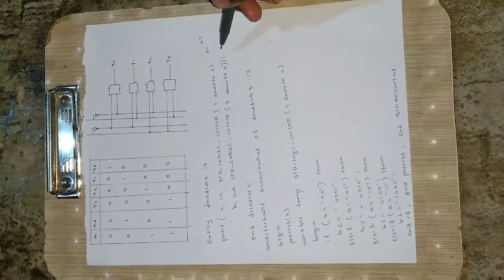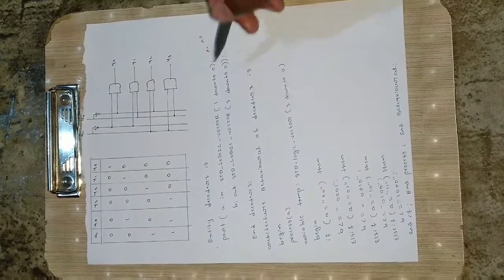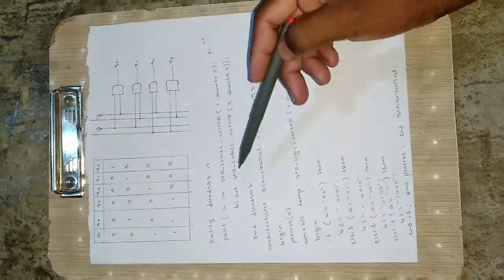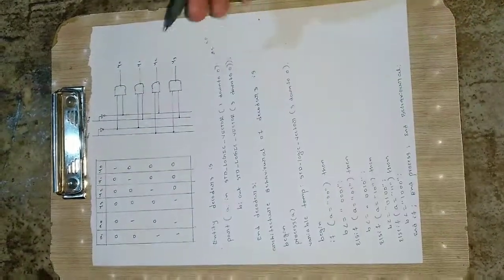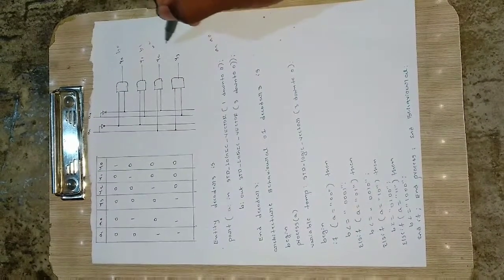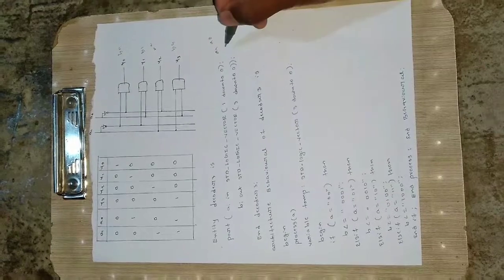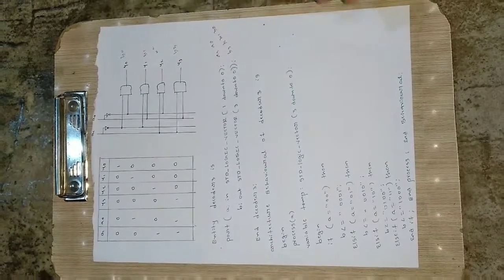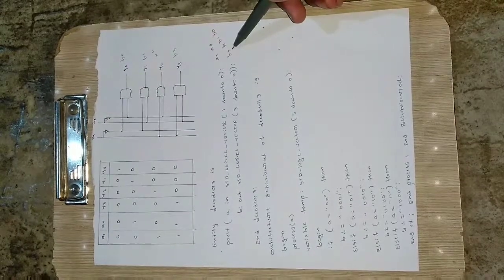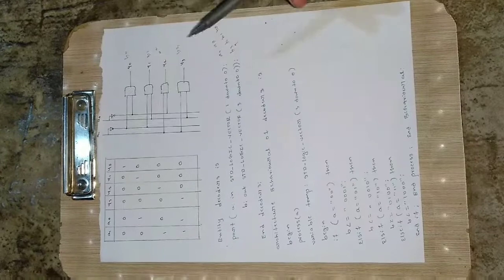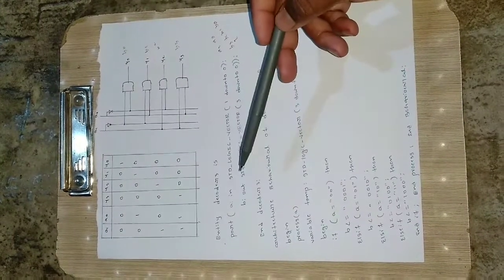So b out standard logic vector 3 down to 0. So here I have represented with y, so I have taken it as b here. So b, so it is just like b0, b1, b2 and b3. So we will be getting this here: b3, b2, b1 and b0. So 3 down to 0 means it will be starting from 3 and it will be going up to 0. And then end decoder, so end this entity.